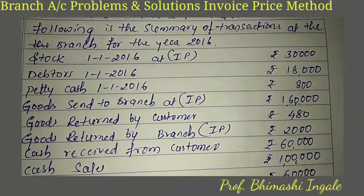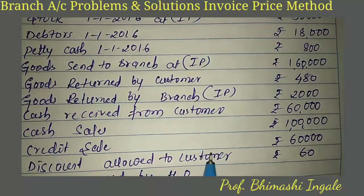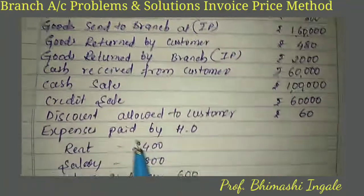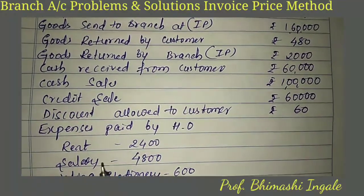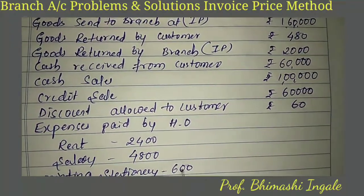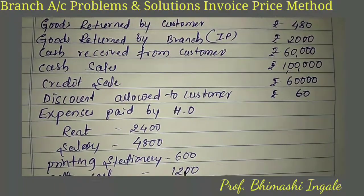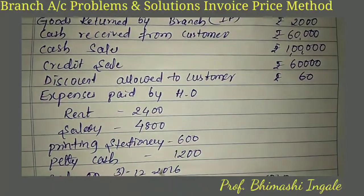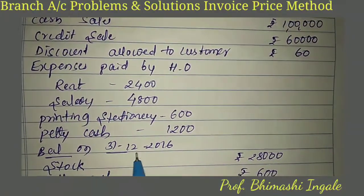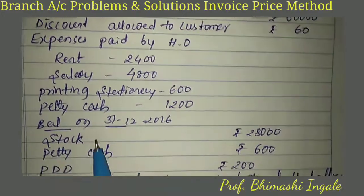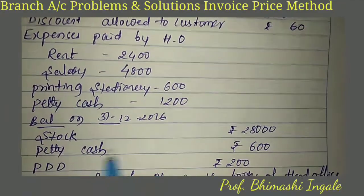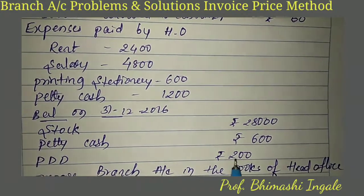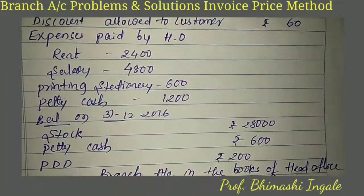Cash received from customers: 600. Cash sales: 1,00,000. Credit sales: 60,000. Discount allowed to customers: 60. Expenses paid by head office — rent: 2,400, salary: 4,800, printing and stationery: 600, petty cash: 1,200. Closing balances on 31-12-2016 — stock: 28,000, petty cash: 600, closing PDD: 200.